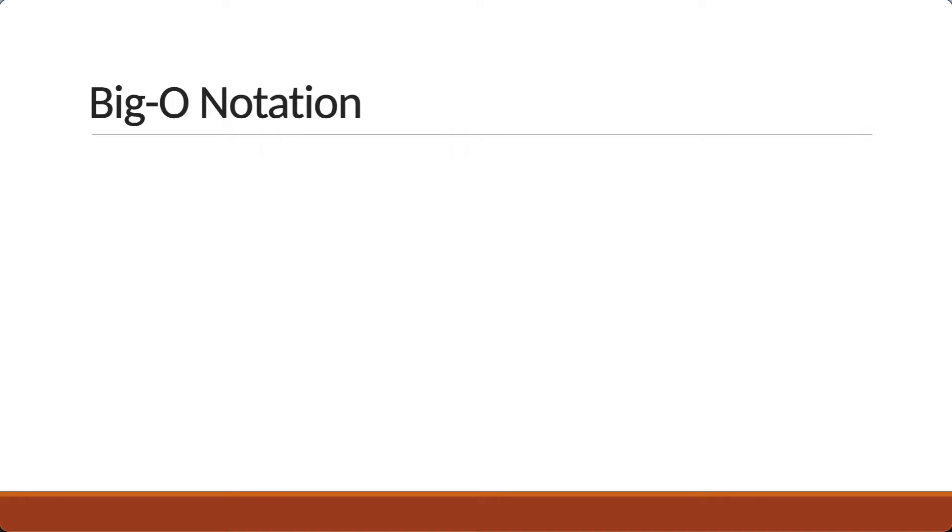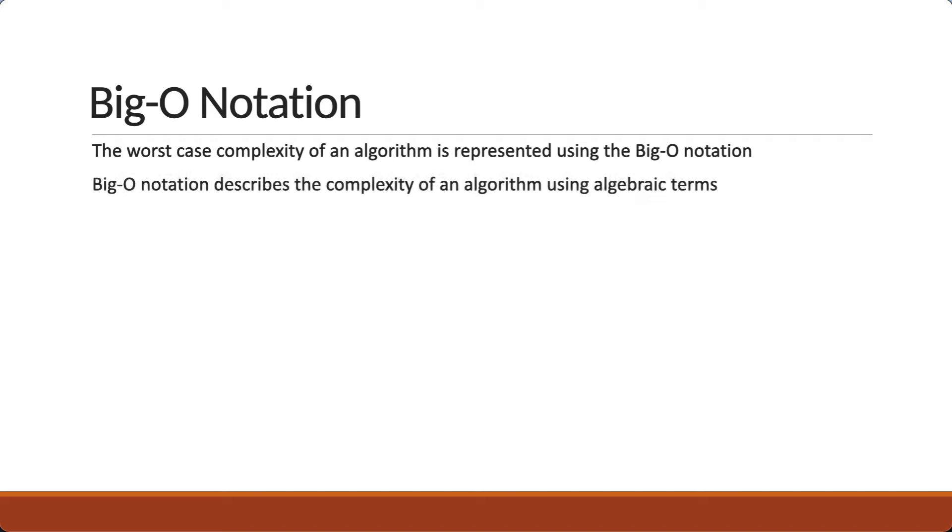In the previous video, I mentioned that the worst case complexity of an algorithm is represented using the Big-O notation. But what exactly is Big-O notation? Let's understand in this video. If I have to explain in very simple terms, Big-O notation describes the complexity of an algorithm using algebraic terms.